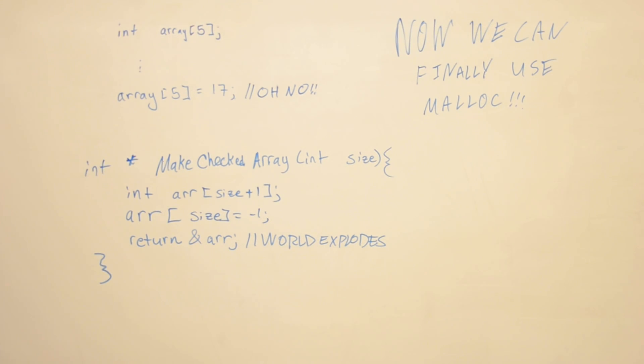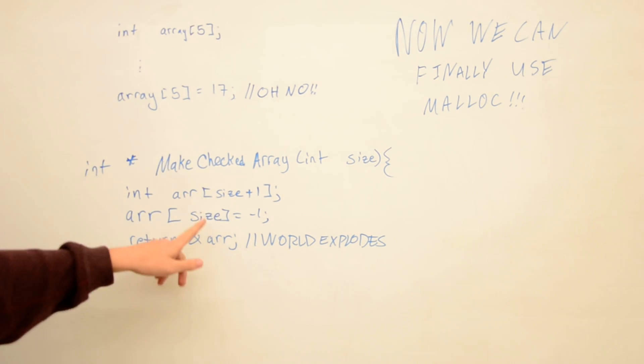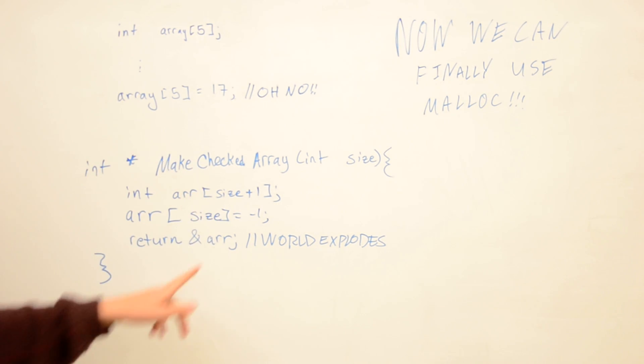Say that your C programmer has been stung by this one too many times, and we decided to make this function called make_checked_array. The idea is that it'll make an array, except it'll secretly allocate one more element, set it to negative one, and then return that array.